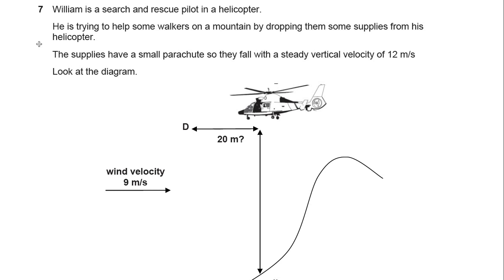What is this question all about? William is a search and rescue pilot in a helicopter. He's trying to help some walkers on a mountain by dropping them some supplies from his helicopter. The supplies have a small parachute, so they fall with a steady vertical velocity of 12 metres per second. That's a velocity — remember, velocities are vectors.